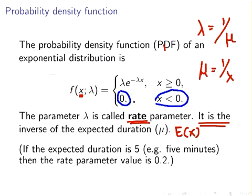The key thing to pick up on here is the rate parameter. If the expected duration is five seconds, for example, then the rate parameter lambda is 0.2. You might be given the expected value in an exam question and asked to determine the rate parameter. The expected duration is the amount of time you expect to wait before a new customer calls, or the amount of time you expect a machine to operate without breaking down.